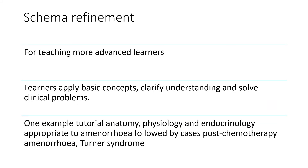Schema refinement is for teaching more advanced learners. Learners apply basic concepts, clarify understanding, and solve clinical problems. One example is a tutorial where anatomy, physiology, and endocrinology are discussed in the context of amenorrhoea, followed by cases where amenorrhoea might be seen — such as post-chemotherapy or Turner's syndrome. It then involves the learners applying these basic concepts to solve the clinical problems.